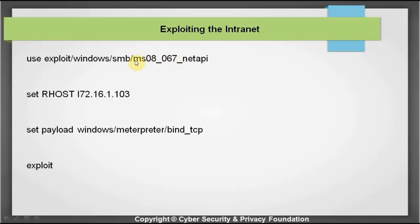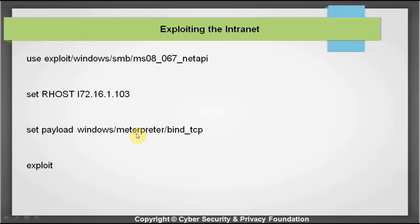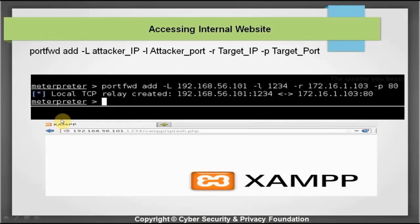We use the MS08-067 NetAPI exploit against the machine found with port 445 open. We set RHOST to that machine's IP, set the payload as the Meterpreter bind_tcp payload, and give the exploit command. After gaining a Meterpreter session, we perform port forwarding using portfwd add, specifying the attacker's IP, attacker's port, the target IP, and target port. This allows the attacker to access an internal website that is normally only available to the victim, retrieving information that exists only on the local network.